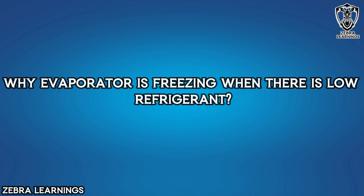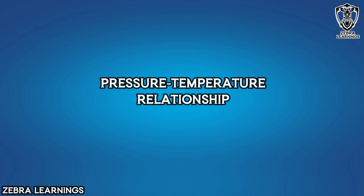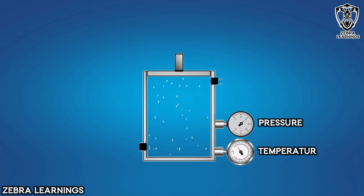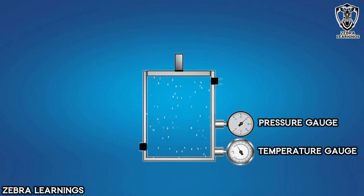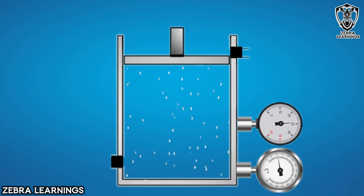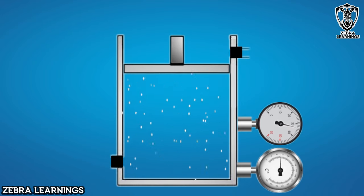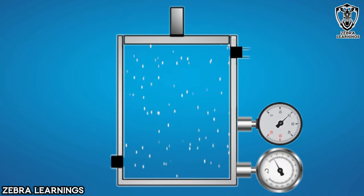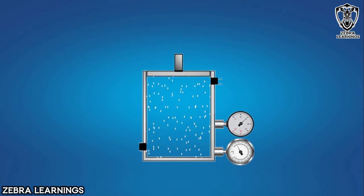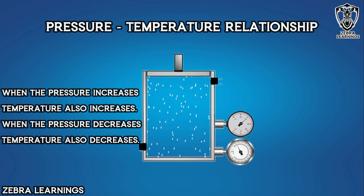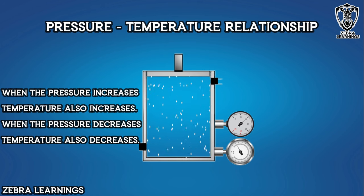Why does the evaporator coil freeze when refrigerant is low? Before that, we can first know about the pressure-temperature relationship. Let's take a box that is completely closed. Fill some air inside the box, and fix a pressure gauge and temperature meter in it. Now, when you apply pressure inside the box, the pressure and temperature of the air inside the box increases. When reducing the pressure, the pressure and temperature of the air will decrease. This is the pressure-temperature relationship: when the pressure increases, the temperature increases, and when the pressure decreases, the temperature decreases.